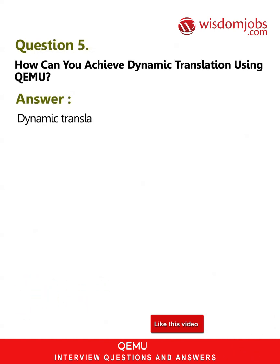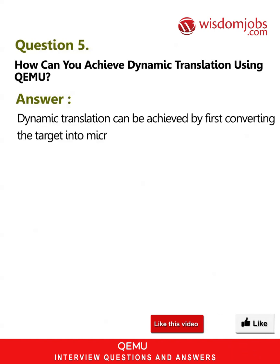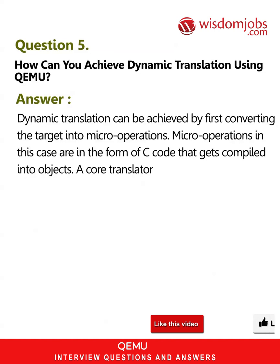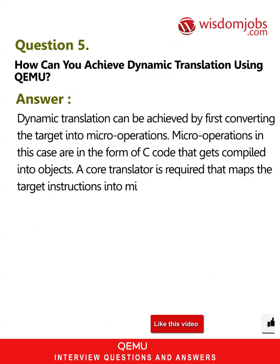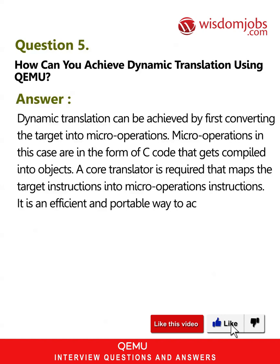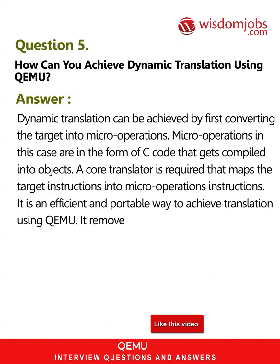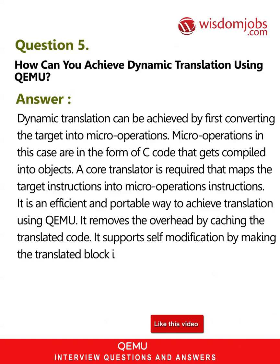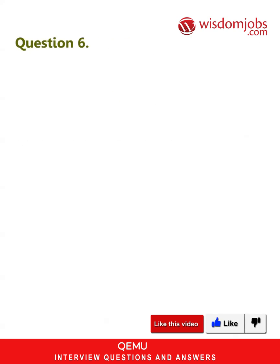Question 5: How can you achieve dynamic translation using QEMU? Answer: Dynamic translation can be achieved by first converting the target into micro operations. Micro operations are in the form of C code that gets compiled into objects. A core translator is required that maps the target instructions into micro operations. It is an efficient and portable way to achieve translation using QEMU. It removes overhead by caching the translated code and supports self-modifying code notification by making the translated block invalidate in cache.